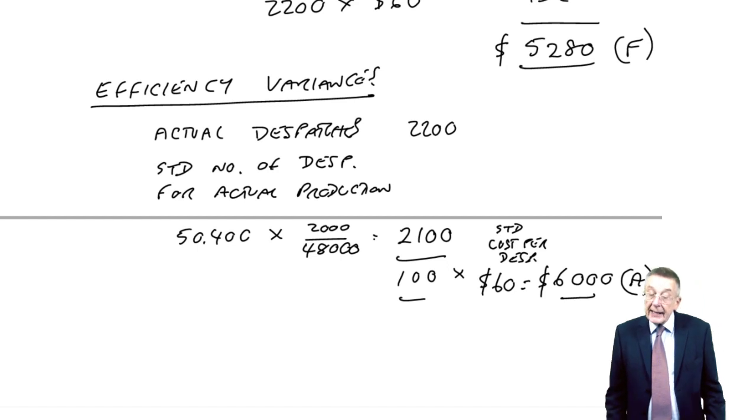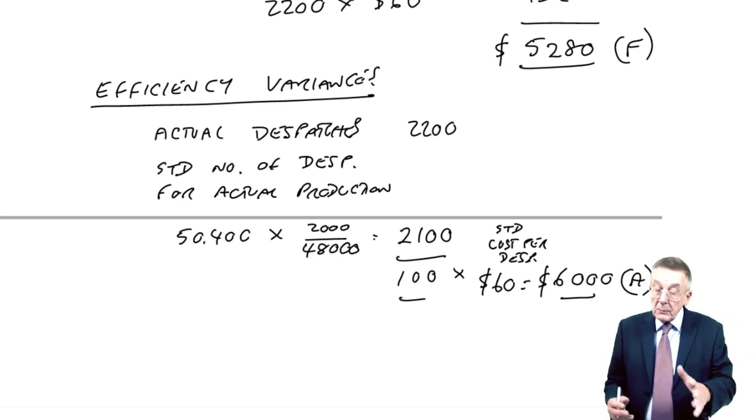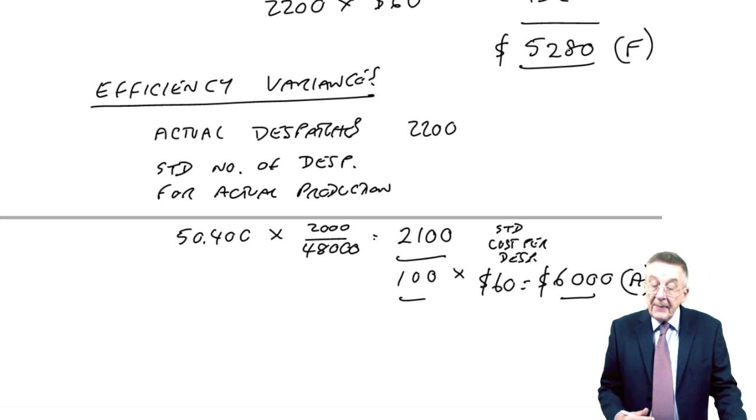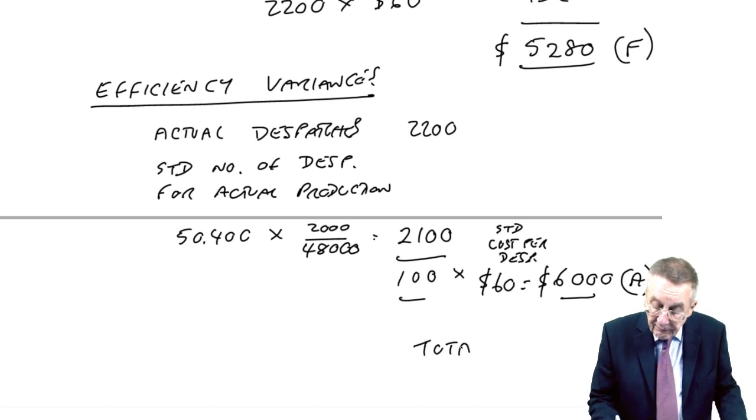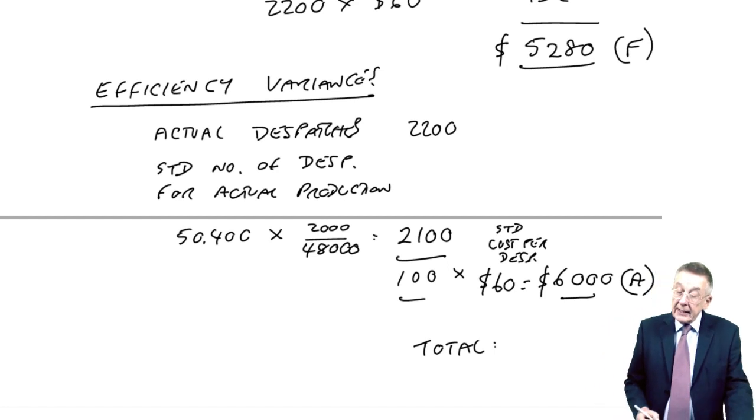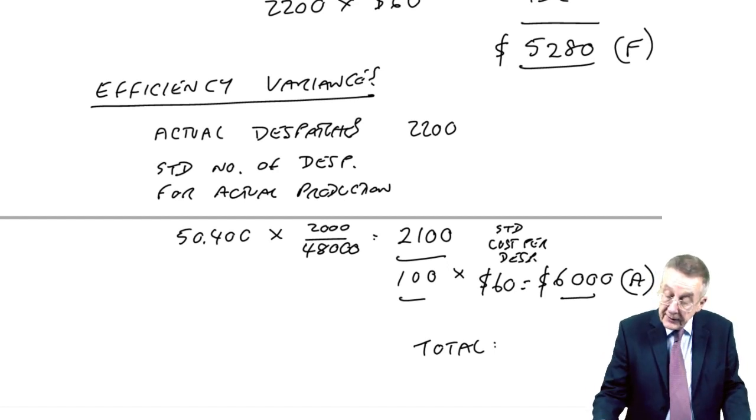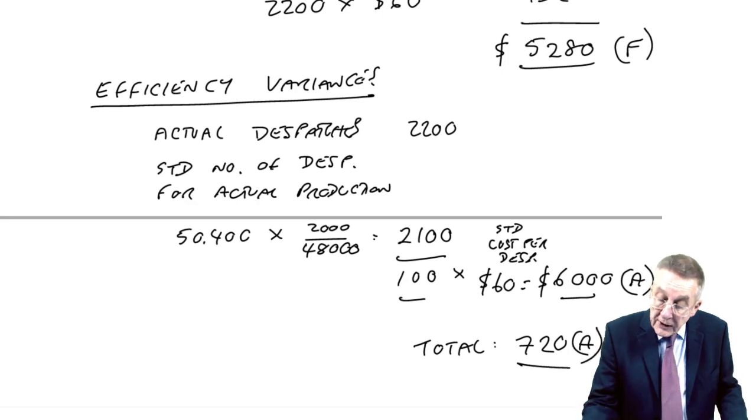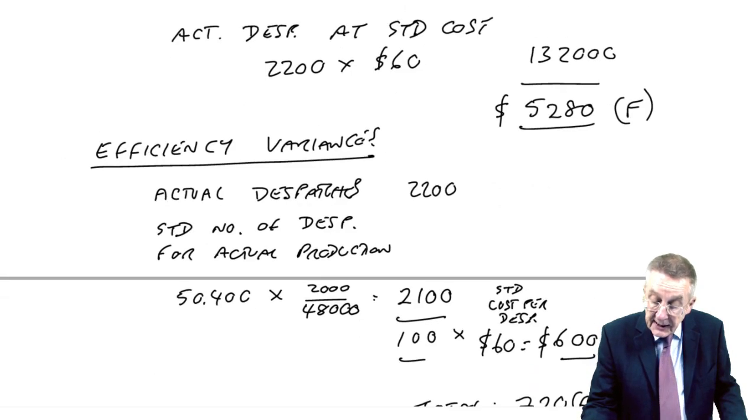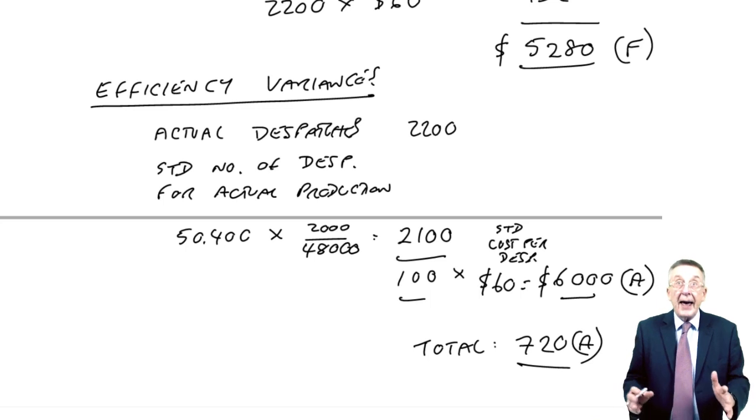Does it check? £6,000 adverse, £5,280 favorable. The two together, the net figure here is the difference of £720 adverse. Which I think is what we got earlier. Yes, it is. It does check. We have analyzed it.